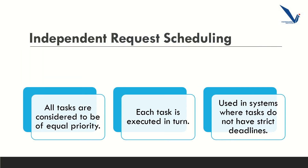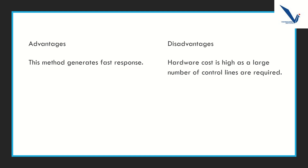Independent request scheduling is a method where all tasks are considered equal and each task is executed in turn. The order of execution is not based on any priority value; instead, tasks are executed in the order they are received. This method ensures that every task gets a chance to execute and no task is left waiting for an extended period. Independent request scheduling is commonly used in systems such as servers and desktop applications. One of the main benefits is that it provides fairness in execution — all tasks are given an equal opportunity and no task is given priority over another. However, independent request scheduling may not be suitable for real-time systems where response time is critical, as tasks may be executed in an order that does not meet their deadlines.